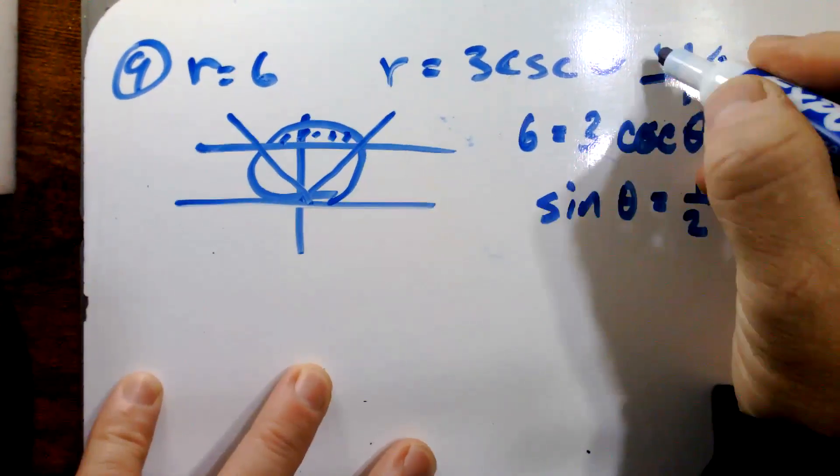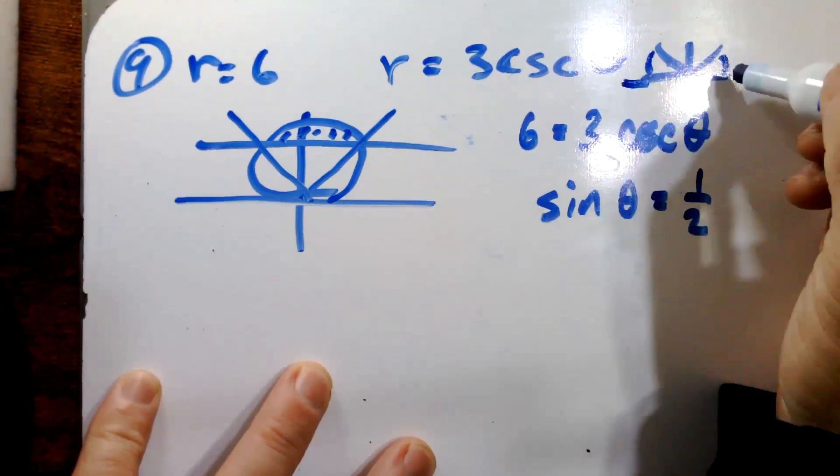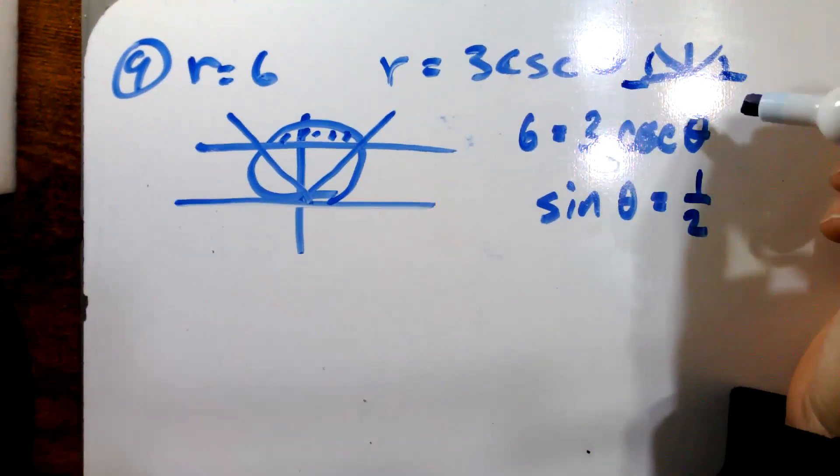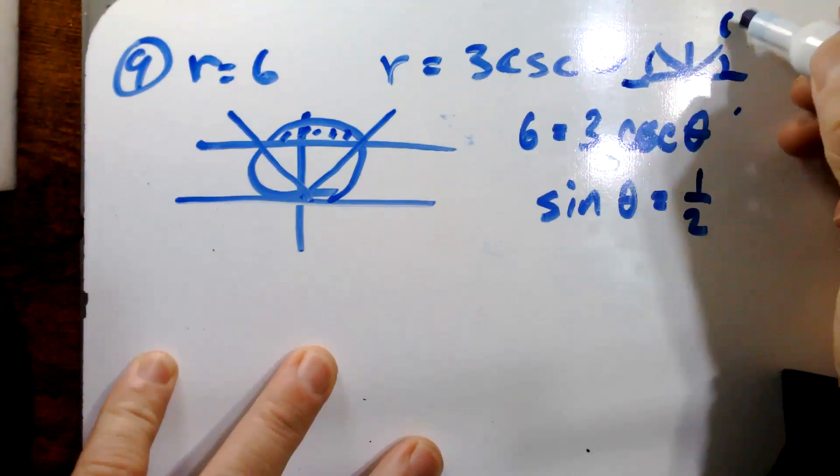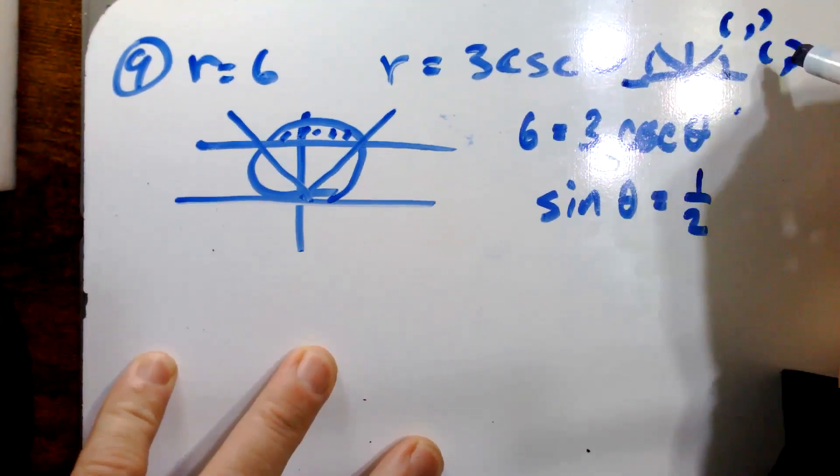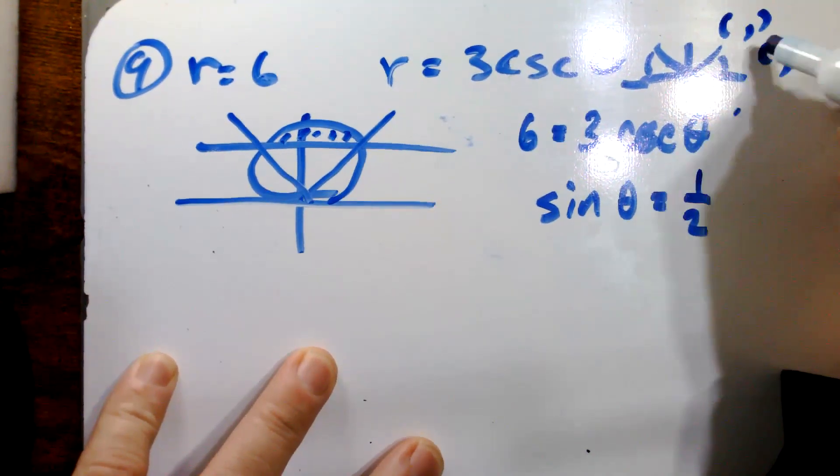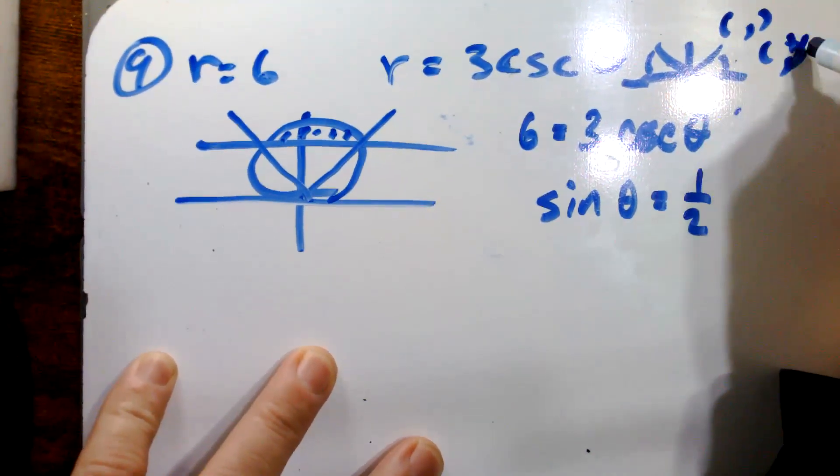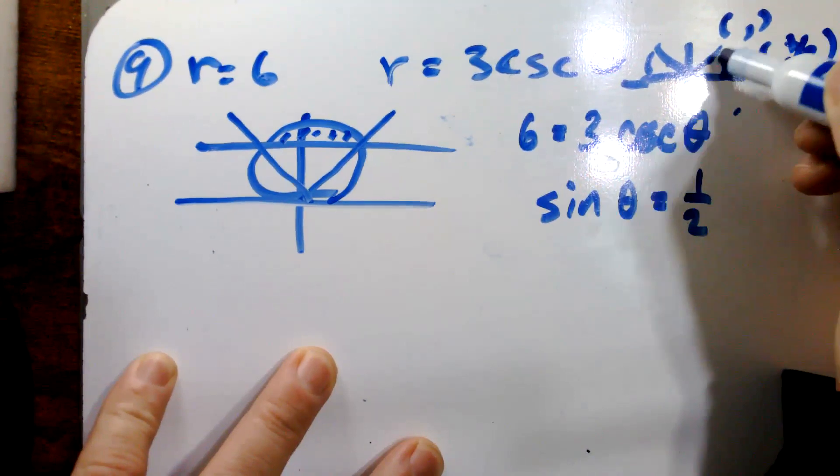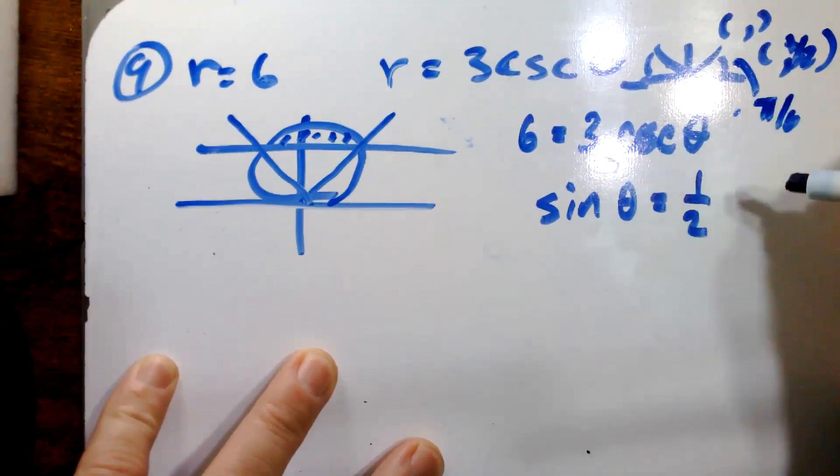And so we're looking for this value and this value here. So if you think of the ordered pairs, like I did before, sine is the y coordinate. And so a sine being a half, that's going to be the smaller of the two. So that would be this one down here, and that means that this reference angle here is pi over six.